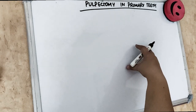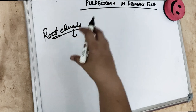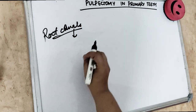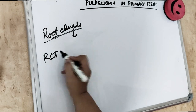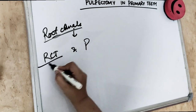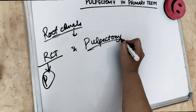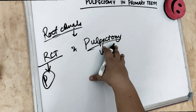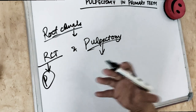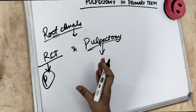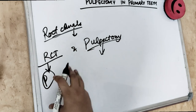We are doing root canal treatment — the root canals are cleaned, enlarged, and disinfected, and then they are filled with a resorbable material. The difference between RCT in permanent teeth and pulpectomy in primary teeth is that in pulpectomy we use a resorbable material because there is physiologic root resorption happening in primary teeth as they shed on their own. In RCT, we use a radio-opaque material.